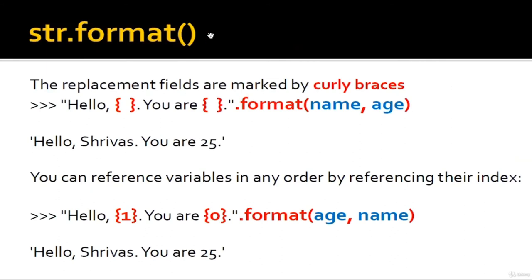Another formatting approach is str.format(). The replacement fields are marked by curly braces. For example: print('Hello, {}. You are {}.'.format(name, age)). The value of name is placed in the first curly braces and age in the second. The output is 'Hello, Srivas. You are 25.' You can also reference variables in any order by using indices in the curly braces.